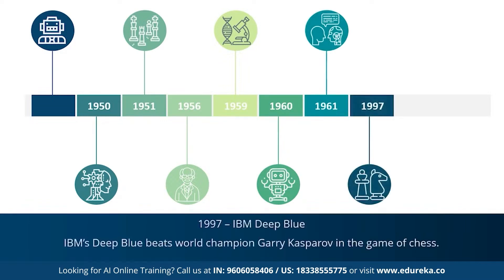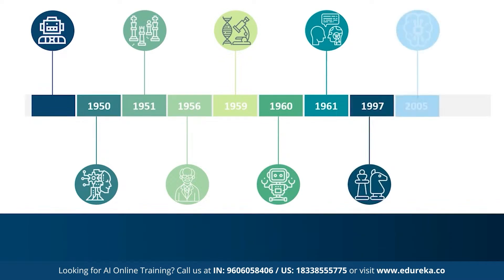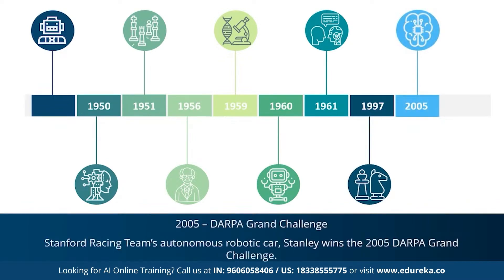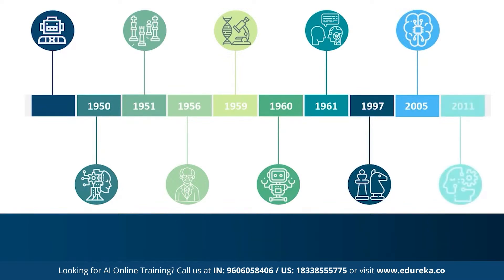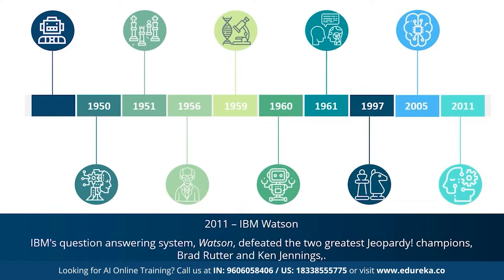In 1997, IBM's Deep Blue beat world chess champion Garry Kasparov. In 2005, an autonomous robotic car called Stanley won the DARPA Grand Challenge. In 2011, IBM's question-answering machine Watson defeated the two greatest Jeopardy champions, Brad Rutter and Ken Jennings. That was a brief history of AI.